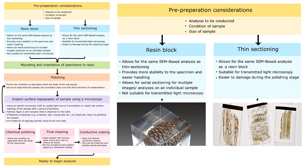There's a couple of pre-preparation considerations that you need to make. The main one is, do you want to make a resin block or a thin section? We generally recommend resin blocks because they allow the same SEM-based analysis to be done, but they provide more stability to microfossils, and easier handling and orientation. However, thin sections are the only way if you want to do transmitted light microscopy.